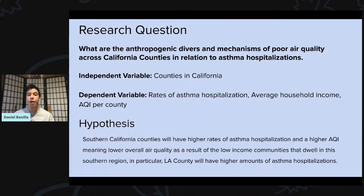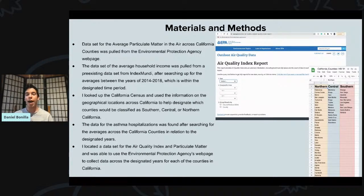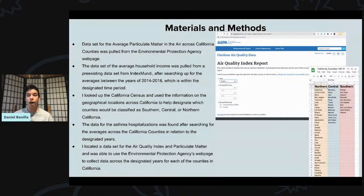My independent variable for this are the different counties in California — there are 58 — and the dependent variable is the rates of asthma hospitalizations, the average household income, and the AQI or Air Quality Index per county. My hypothesis is that Southern California counties will have higher rates of asthma hospitalizations and a higher AQI — meaning lower overall air quality — as a result of the low-income communities that dwell in the Southern region. In particular, LA County will have higher amounts of asthma hospitalizations. For materials and methods, a lot of the data sets I got were from pre-existing sets online, which was great — I didn't have to go to every single county in California and collect the air quality data myself. The data for the Air Quality Index report, which included particulate matter, ozone, and carbon emissions, was all from the EPA. All the average household income information was pulled from Index Mundi for the years 2014 to 2018. I used the California Census to divide up the different regions of California into northern, central, and southern, made that into an Excel sheet, and the asthma hospitalization data was also found online for the specific years 2015 to 2018.